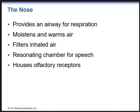Now we'll look at the individual structures. The first structure is the nose. The nose provides an airway for respiration, helps moisten and warm air, and filters inhaled air — little hairs within the nose help filter out debris, pollution, and possible pathogens. The nose is also a resonating chamber for speech and houses olfactory receptors. The cribriform plate of the ethmoid bone has little foramina where the olfactory nerve can pass through and enter the nasal cavity to pick up smells.